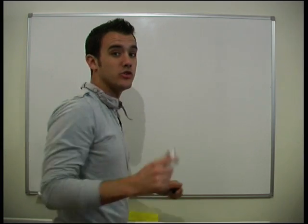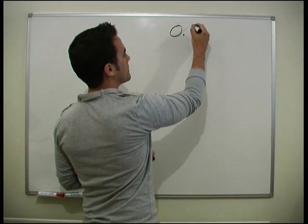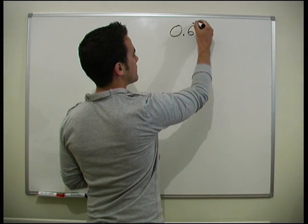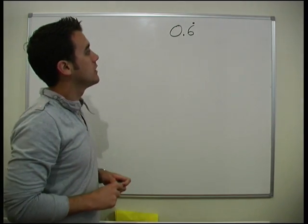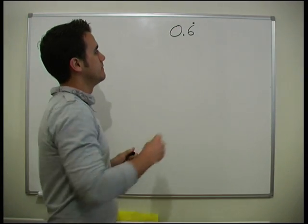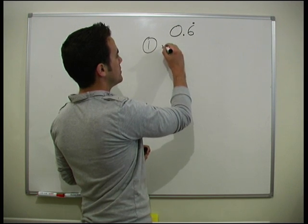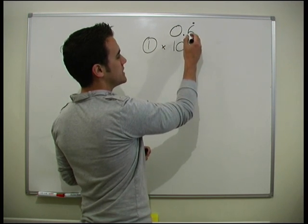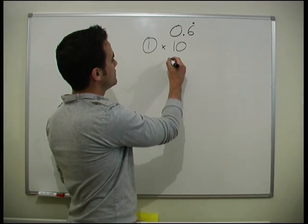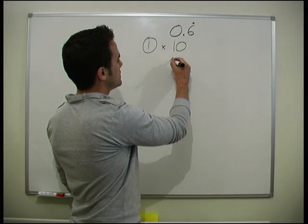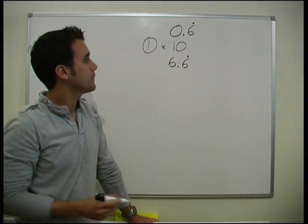The first example I'll use is two thirds — we'll do 0.6 recurring. So what we need to do to get this to a fraction, we'll times it by 10. The first step: we times it by 10, because only one decimal place is recurring. So times by 10 gives us 6.6 recurring. So that's 10x.